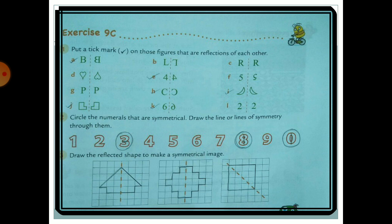Now draw the reflected part to make a symmetrical image. You have one half given; you need to draw the mirror image on the other side. Think of it as placing a mirror along the line of symmetry and drawing what you would see. This is a very simple part of the chapter — do it carefully.